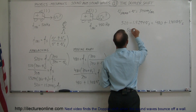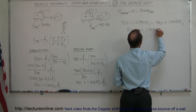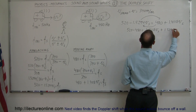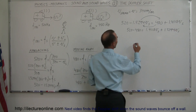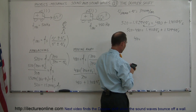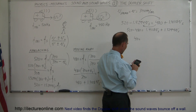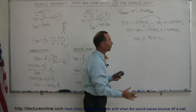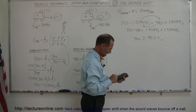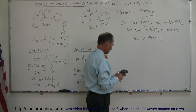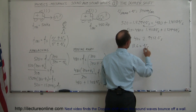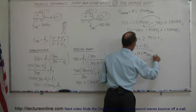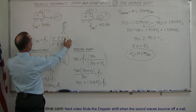Setting the equations equal: 520 minus 1.5294 v_source equals 480 plus 1.4118 v_source. Moving variables to one side and numbers to the other: 520 minus 480 equals 1.4118 v_source plus 1.5294 v_source, giving us 40 equals 2.9412 v_source. Dividing both sides by 2.9412, we get the velocity of the source equals 13.6 meters per second.